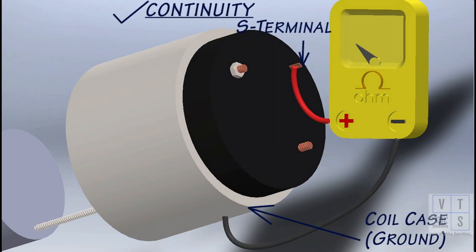Check for continuity across magnetic switch S terminal and coil case. If no continuity exists, hold-in coil is open and should be replaced.